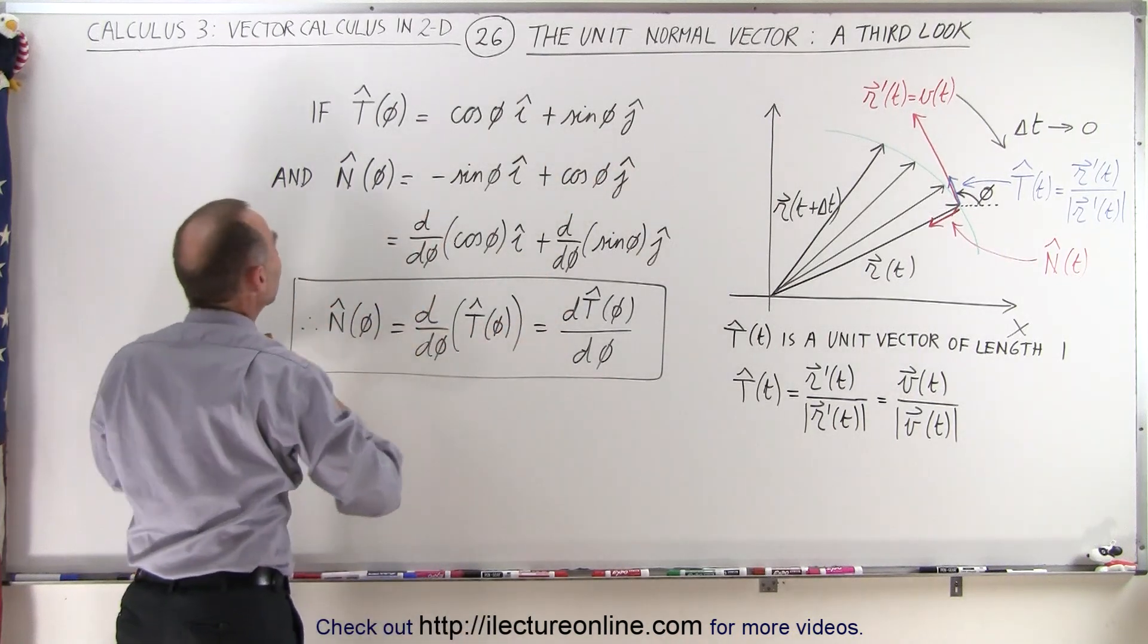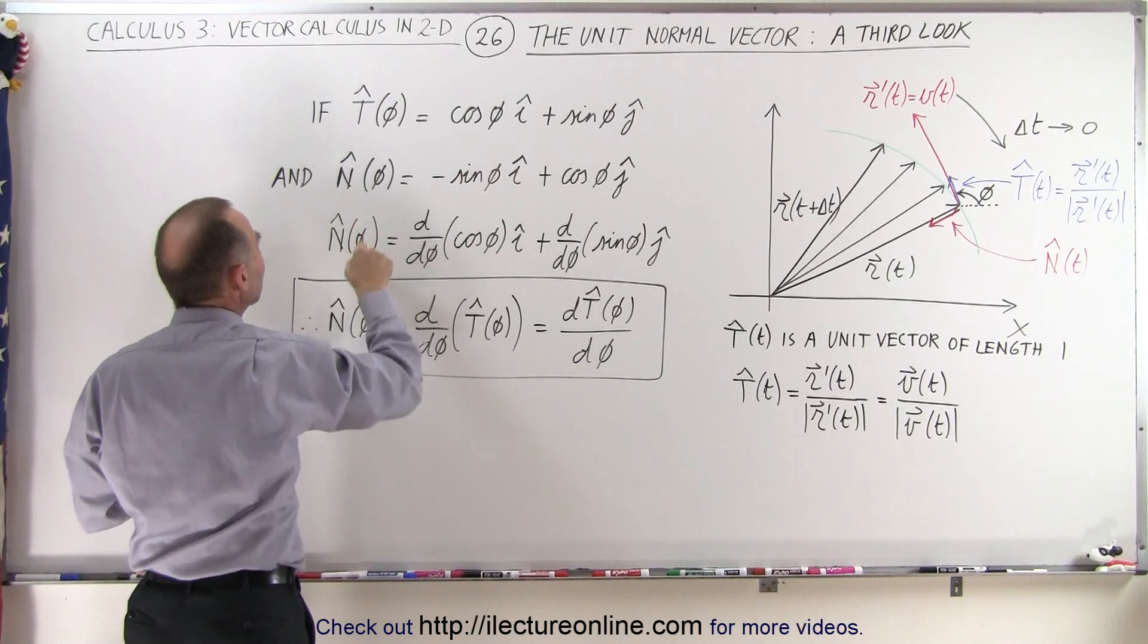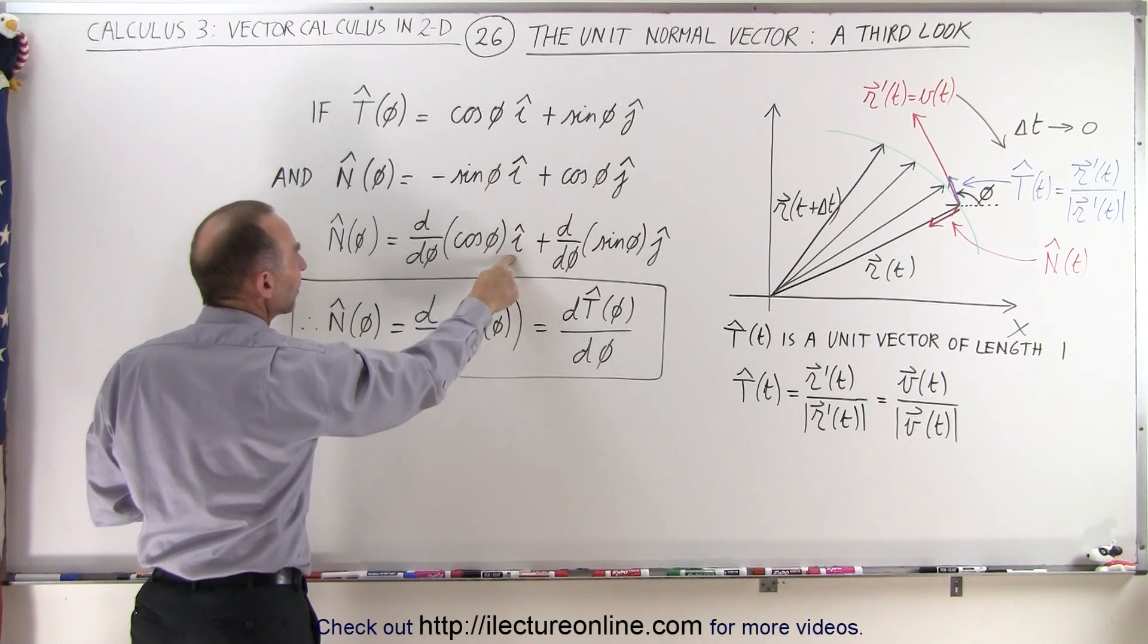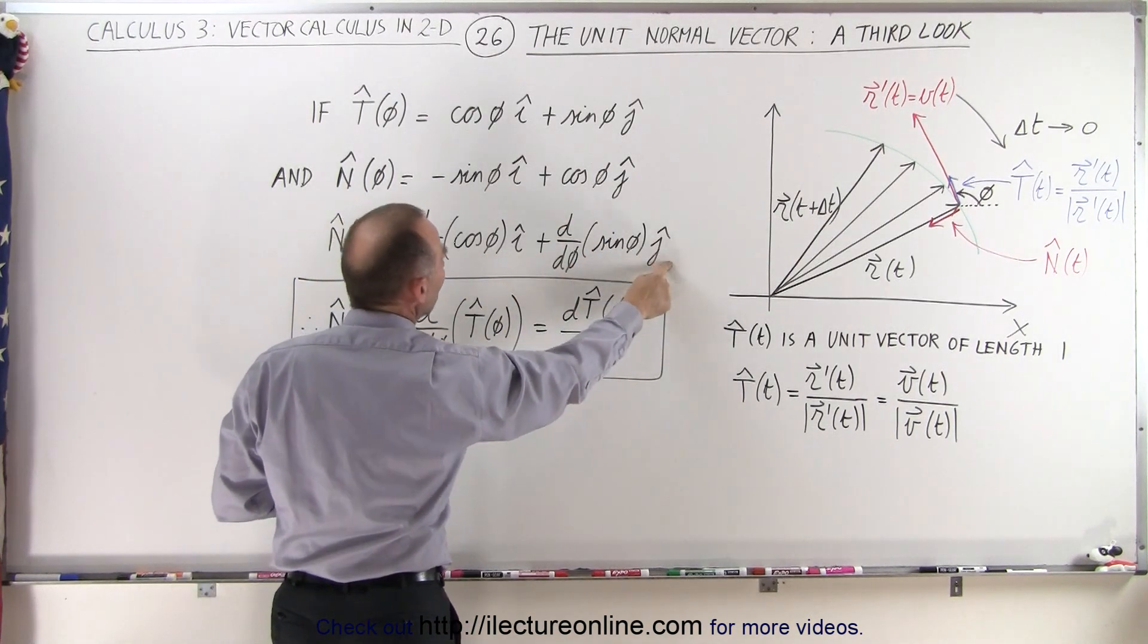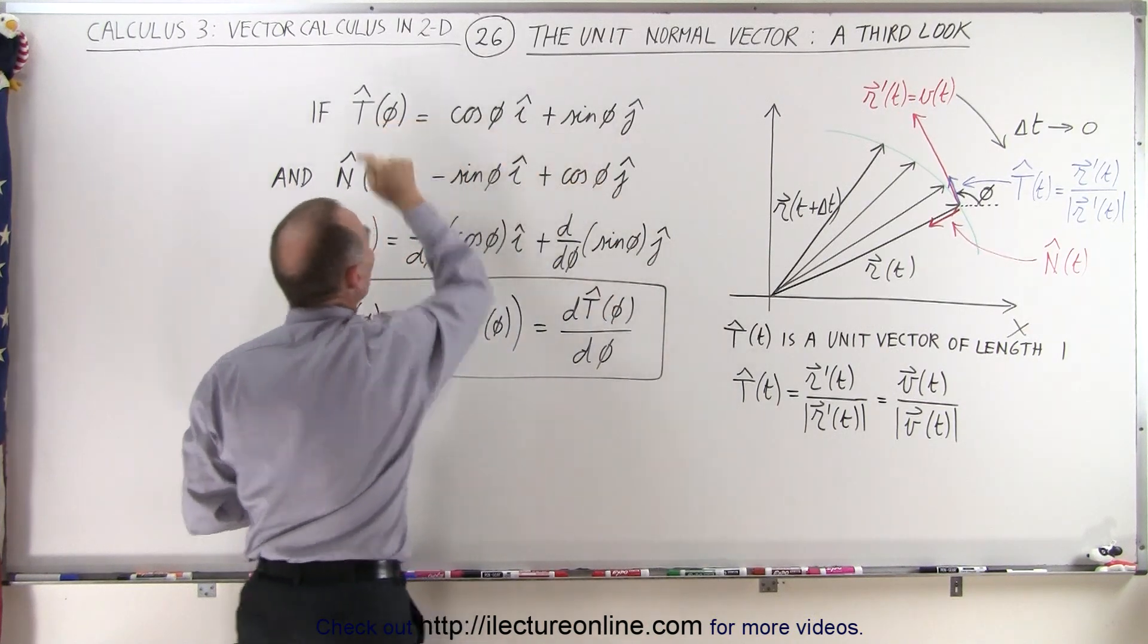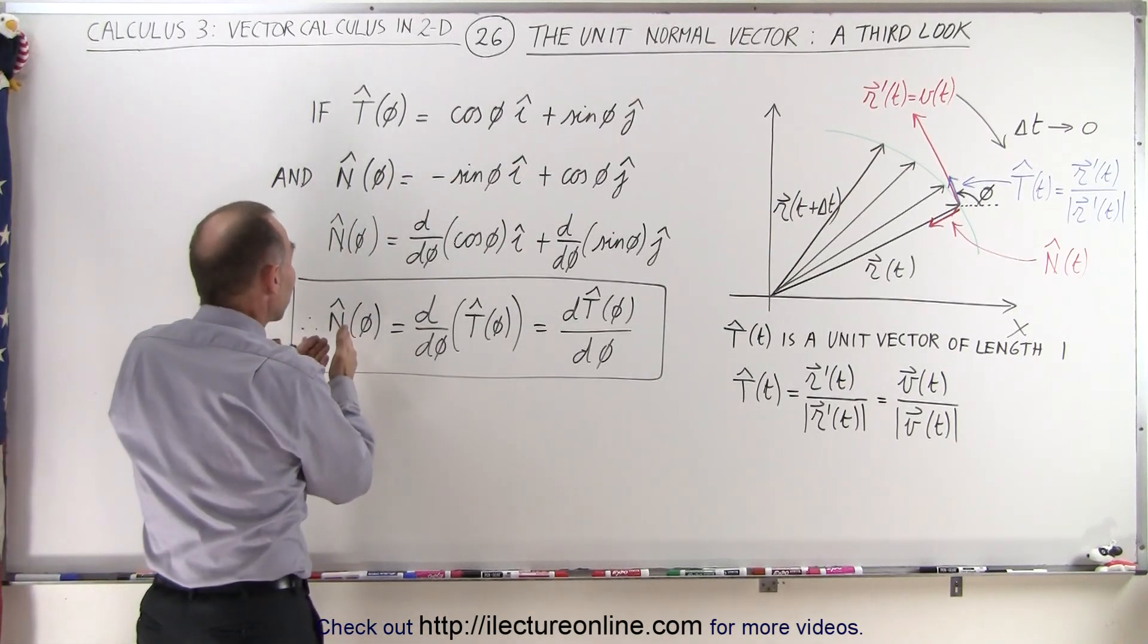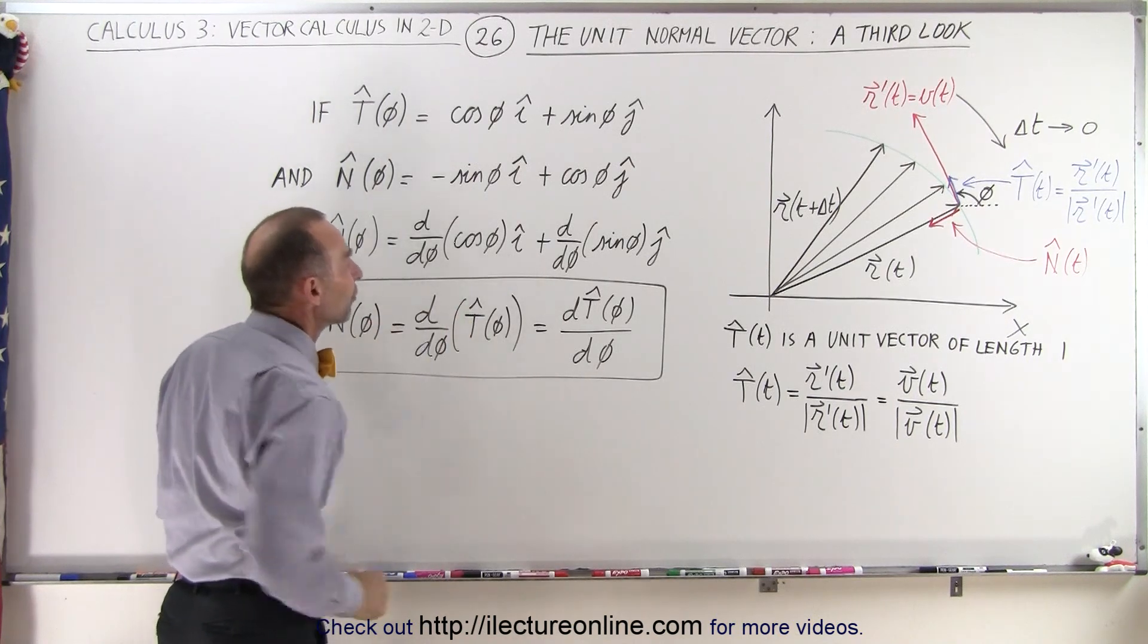With other words, we can define the unit normal vector as a function of the angle phi as being the derivative with respect to phi of the cosine of phi in the i-direction plus the derivative with respect to phi of the sine of phi in the j-direction, the cosine of phi being the x component and the sine of phi being the y component of the unit tangent vector, which means that unit normal vector is simply the derivative with respect to phi of the unit tangent vector.